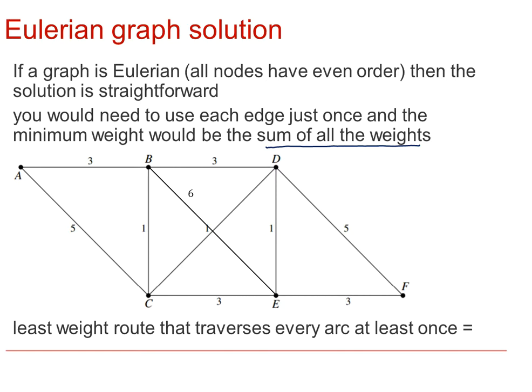So for this graph here, you can see that this network has had an extra arc added to BE so that the nodes B and E have now order 4. So hence all of those nodes are even and it is an Eulerian network. So we'd add all those up, so the 3, the 5, the 1, 1, 6, 3, 1, 3, 3, and 5. So the sum of the weights in this case happens to be 31.